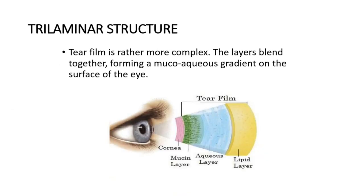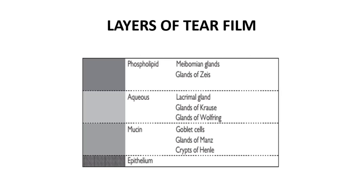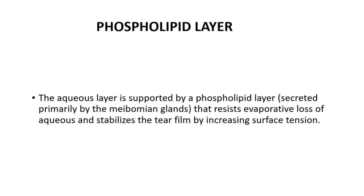Tear film is rather more complex. The layers blend together, forming a mucoaqueous gradient on the surface of the eye. The aqueous layer is supported by a phospholipid layer, secreted primarily by the meibomian glands, that resists evaporative loss of aqueous and stabilizes the tear film by increasing surface tension.